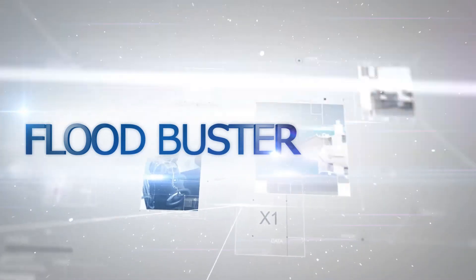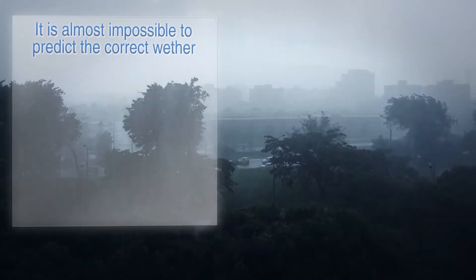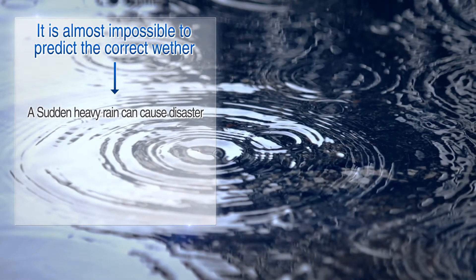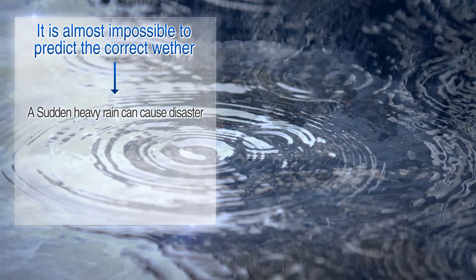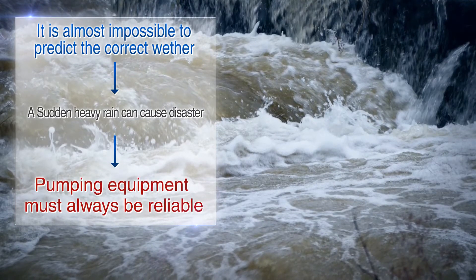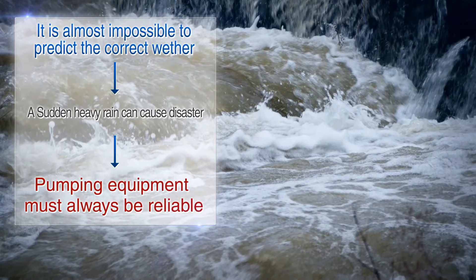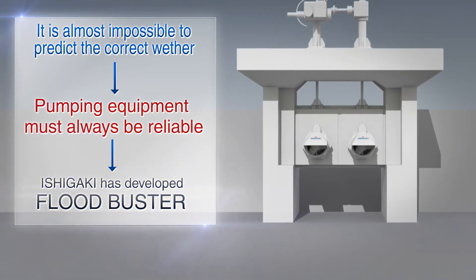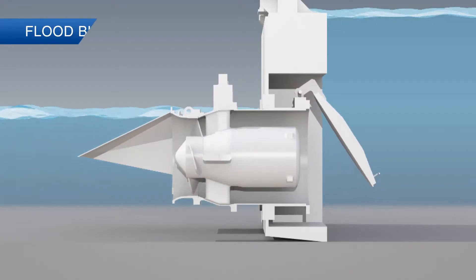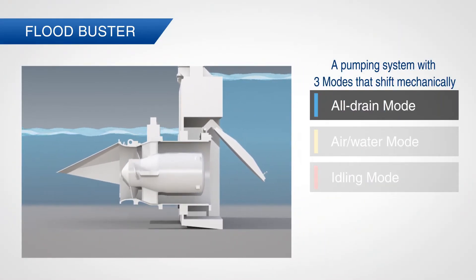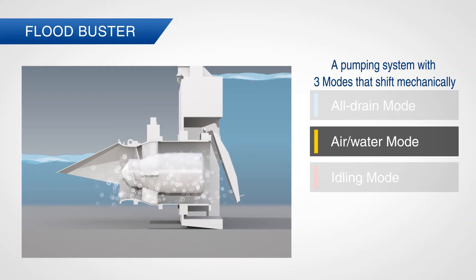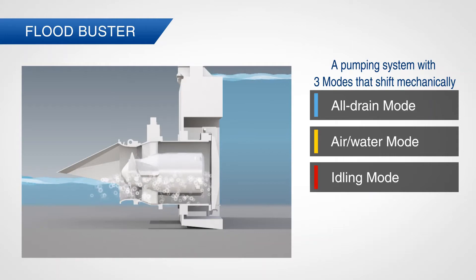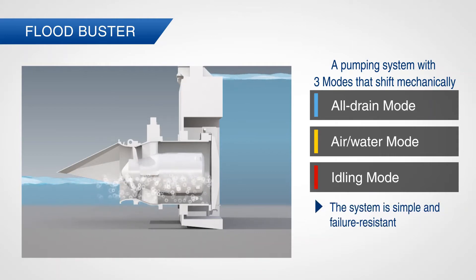Here you see the function of Flat Buster. The weather prediction is very difficult — local, intermittent, and sudden heavy rains can lead to disasters. Reliable pumping equipment is required to prevent such disasters. Flat Buster has been developed in response to this requirement. The three modes — all draining, air and water, and idling — are automatically shifted without any complicated electric controls such as inverters. The system is so simple that it is very difficult to break down.